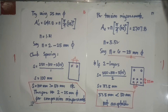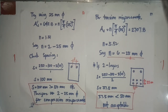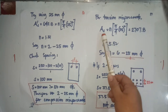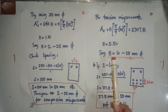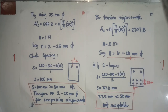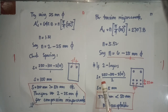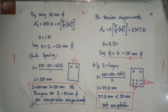For tension reinforcement, also try 25mm diameter: N = 2707.8 / (π/4 × 25²) = 5.52, use 6 bars. If arranged in one layer of 3: S = (250 - 100 - 3×25) / 2 = 37.5 mm, which is less than 50 mm - not acceptable. Try two layers.